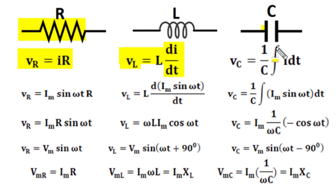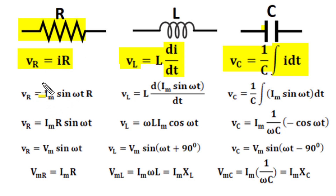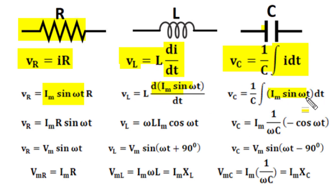A capacitor is two conductors separated by an insulator which stores charge proportional to voltage. Charge is the integration of current, and the proportionality constant is 1/C, giving the relation V_C = (1/C) ∫i dt. In all three relations, if we take current as the standard reference sinusoidal quantity I_m sin(ωt), in an inductor it would be differentiated and in a capacitor it would be integrated.